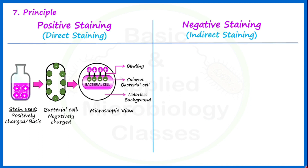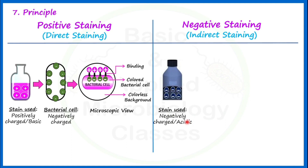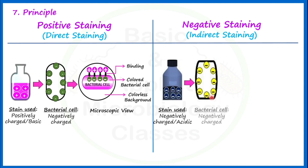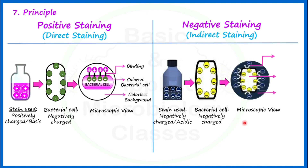Now for the negative staining principle: here the staining reagent carries a negative charge — it is an acidic stain. When we use this stain on the bacterial cell, the bacterial cell again carries a negative charge on its surface. So the negative charge of the staining reagent is repelled by the negative charge on the bacterial cell surface. This repulsion between the dye and the bacterial cell means the bacterial cell will be colorless, and the background will be colored. This is the underlying principle of negative staining.